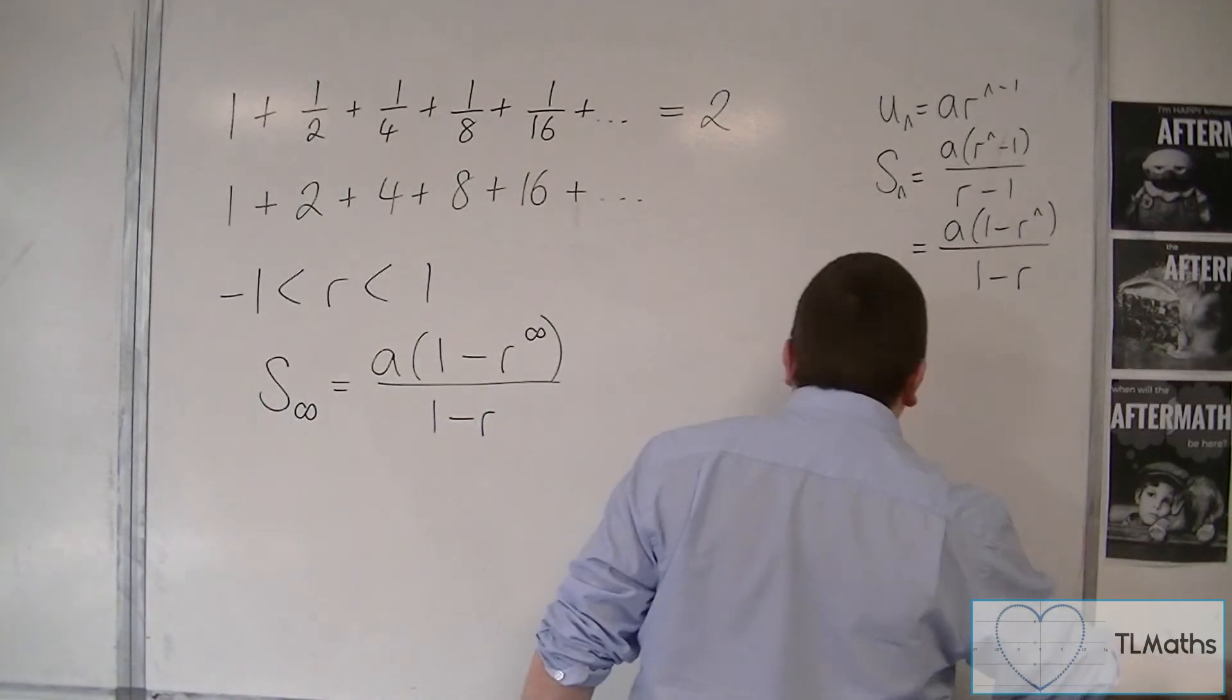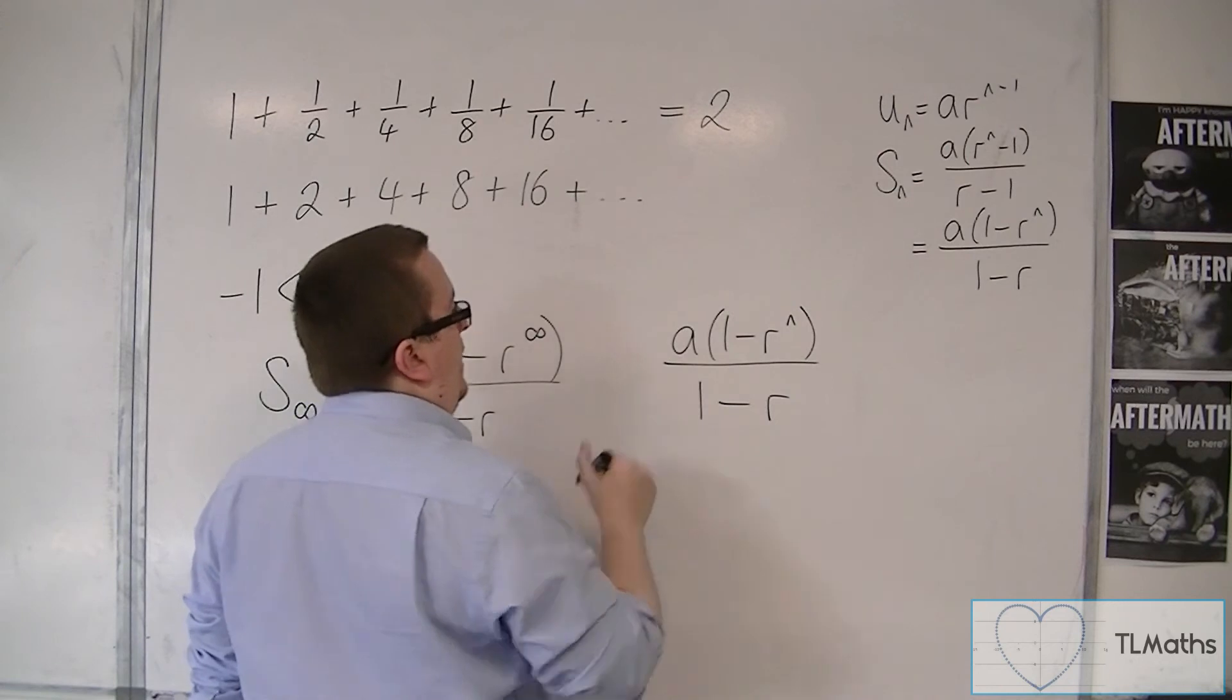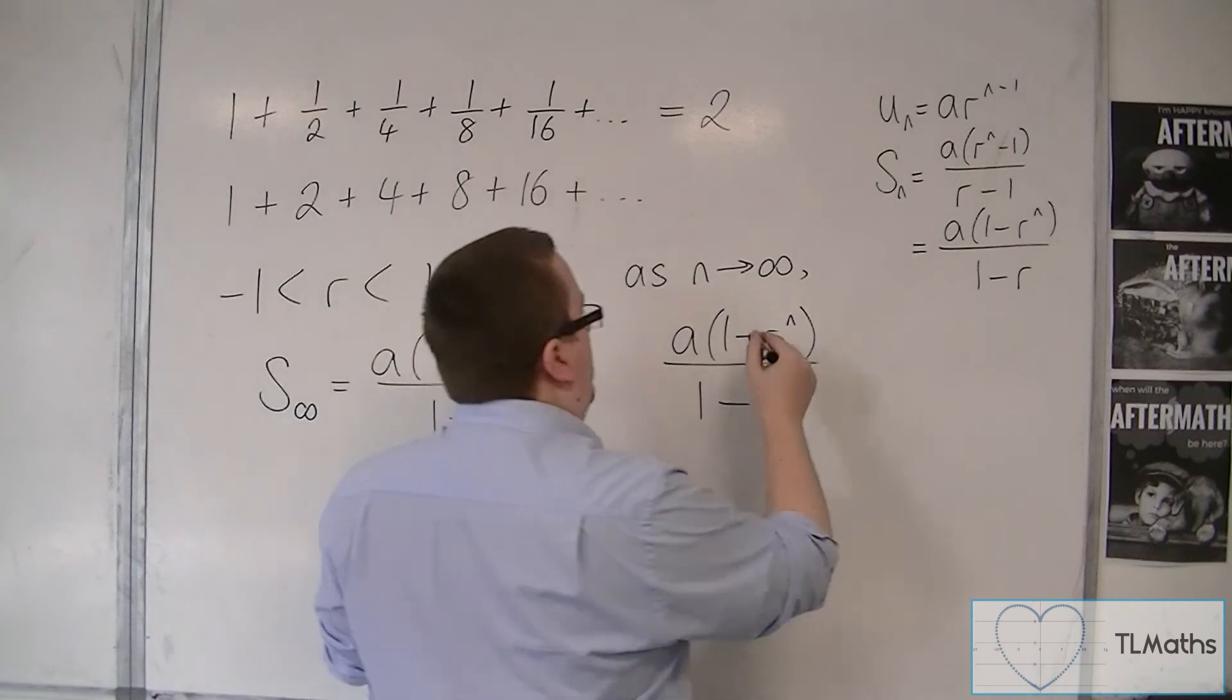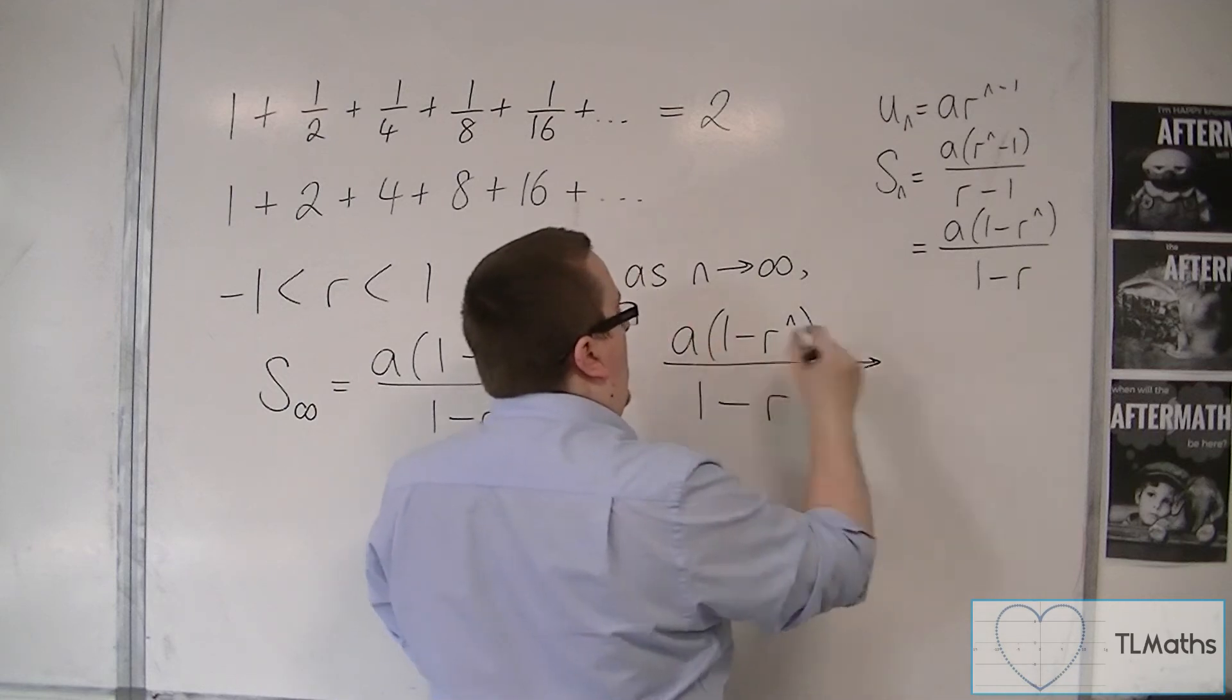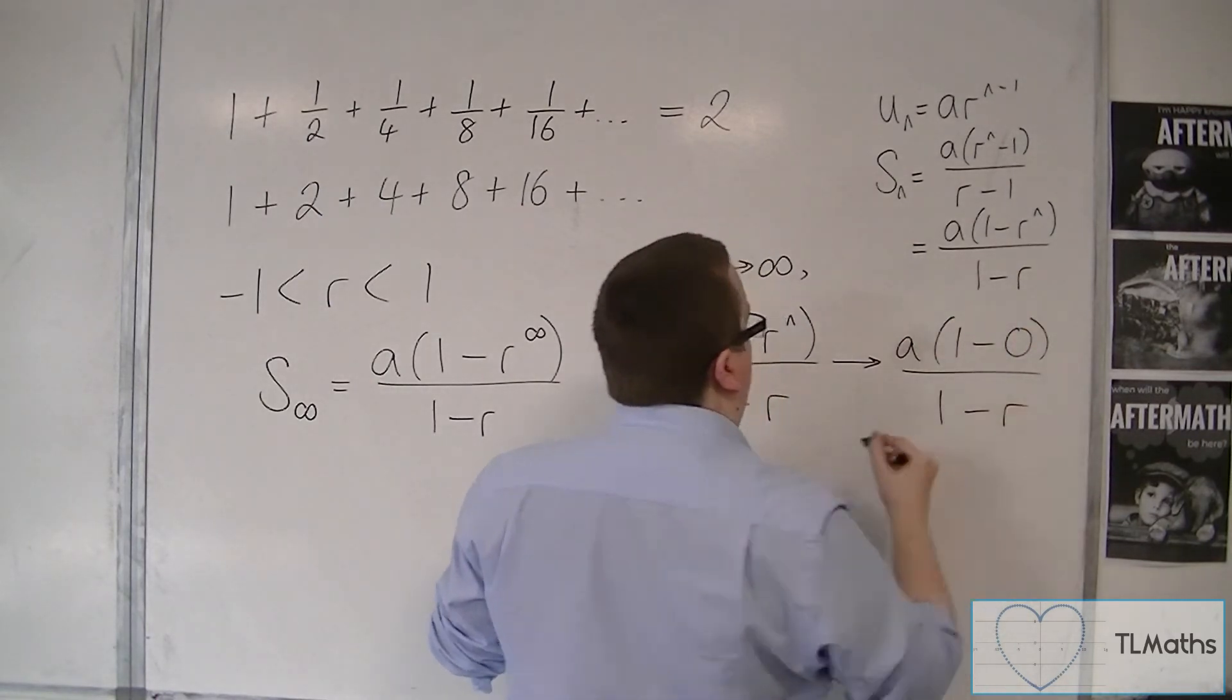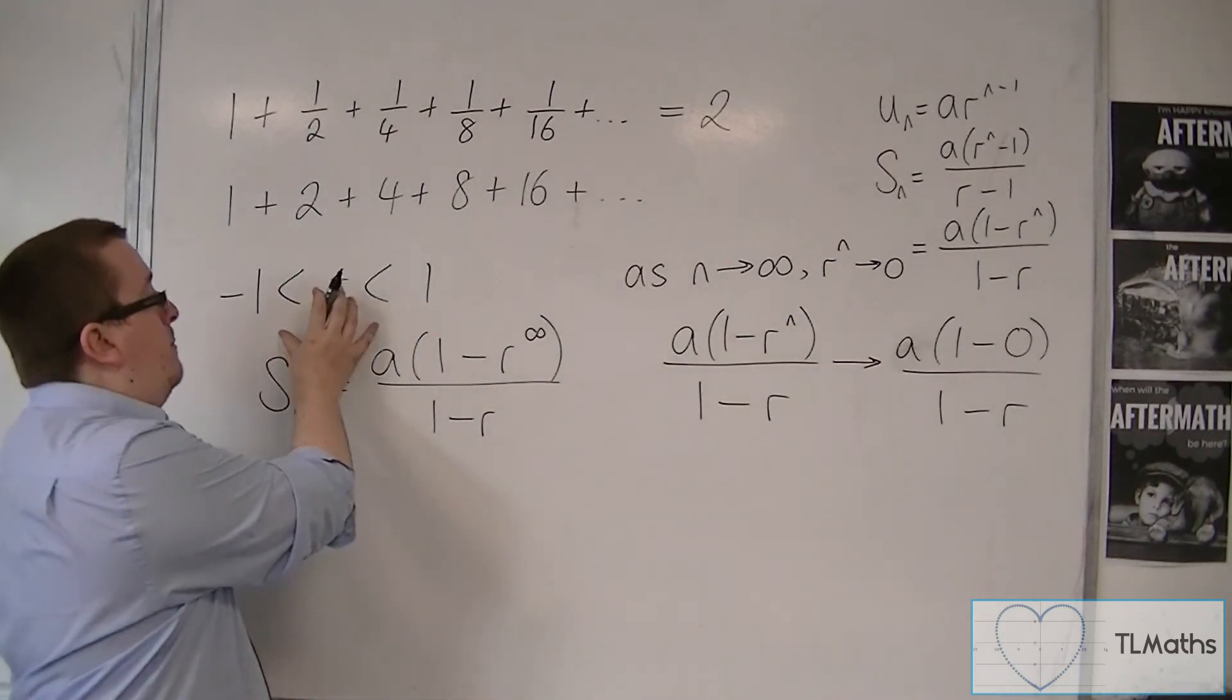So what we're going to have is if I start with this, then what I want to say is that as n tends to infinity, and r is between minus 1 and 1, this tends to a times 1 minus 0 over 1 minus r. The reason being is that r to the n will tend to 0 because the r to the n will get smaller and smaller and smaller because r is between minus 1 and 1.